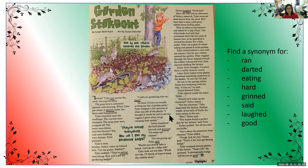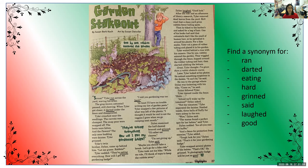Here I've underlined some words, and I'd like you to find a synonym for the underlined words. So we've got: 'Scram! Tyler ran across the yard, waving his arms.' What's a good synonym for ran — a word with a similar meaning that we could replace to make the sentence more enhanced, more vivid? We could say darted or sprinted. So we could say 'Tyler darted across the yard' or 'Tyler sprinted across the yard.'